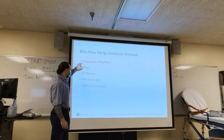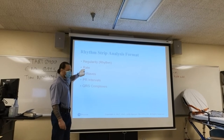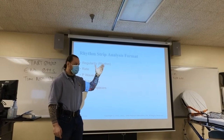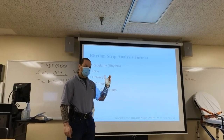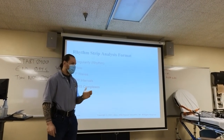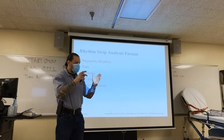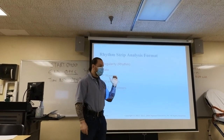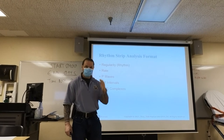We're going to look if rhythm is regular or irregular. We're going to do rate, and rate can be determined a couple of ways. One is you could count the number of QRS complexes in a six-second strip and times that by 10. Or you could do the box method: 300, 150, 175. If your rhythm is irregular, use the six-second strip times 10. If your rhythm is regular, the best method is the box method.